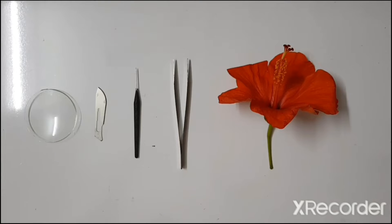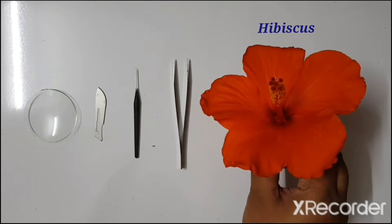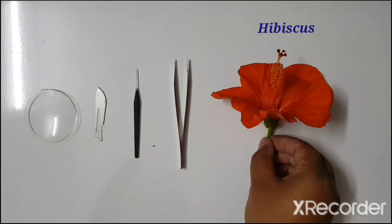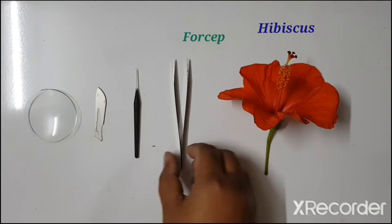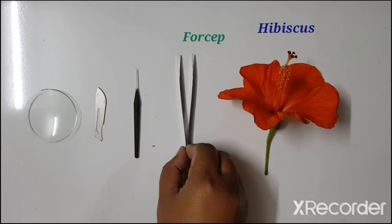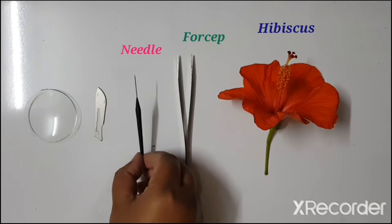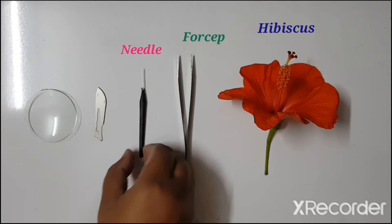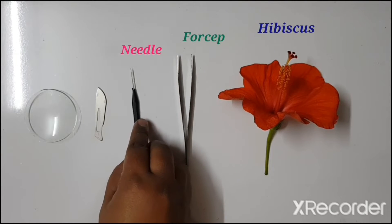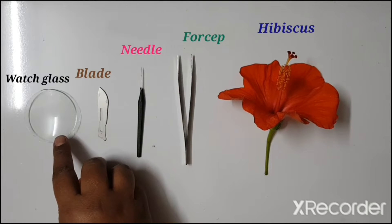Let us first see the requirements for this practical. We require a hibiscus flower, forcep, needle, blade, and watch glass.